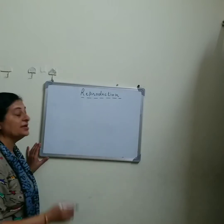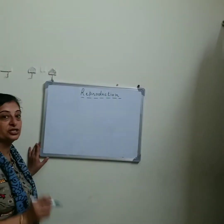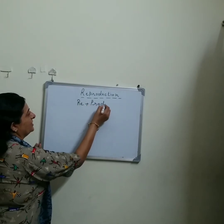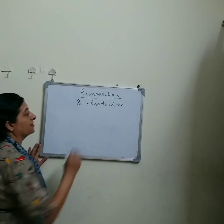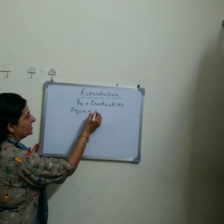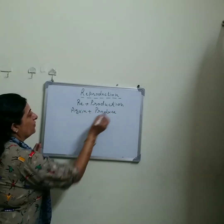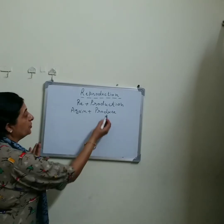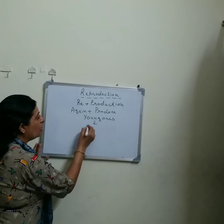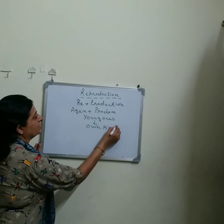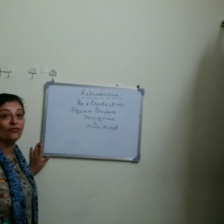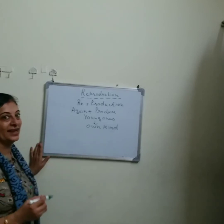We can divide this word reproduction into two parts: re plus production. Re means again, and production means to produce. So when any living organisms produce young ones of their own kind, this process is known as reproduction. It is a must for the continuation of life on this planet earth.